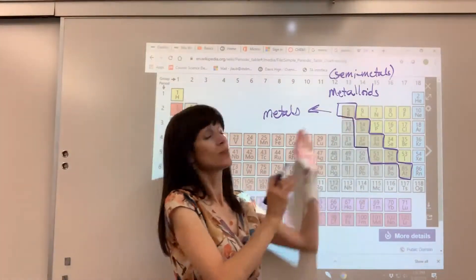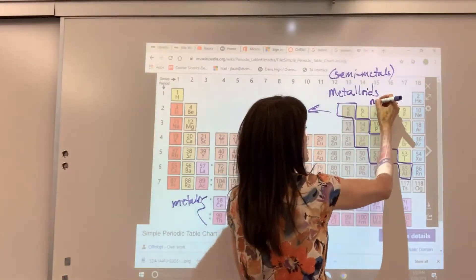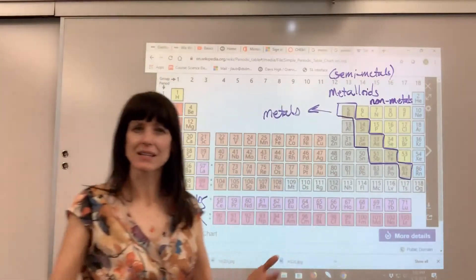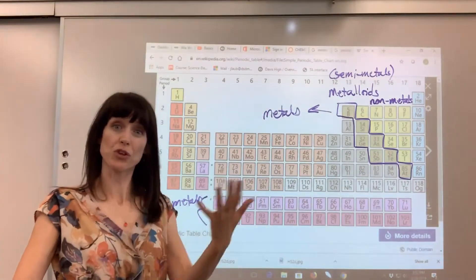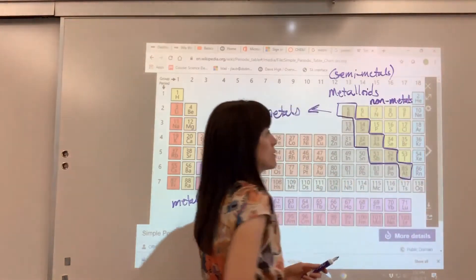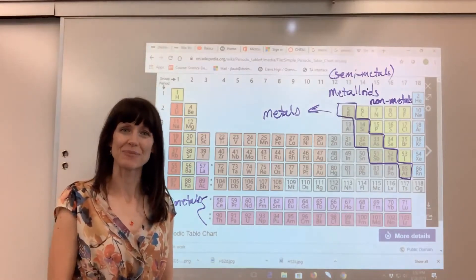Now to the right of the periodic table, these are all non-metals. And every time I look at this, I'm just a little surprised at how few non-metals there are. It's just this little section right there. There you have it - types of elements on the periodic table.